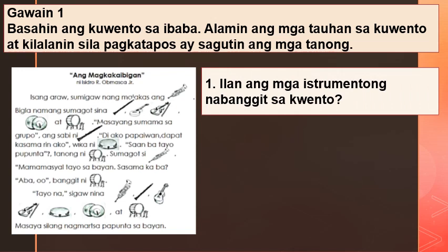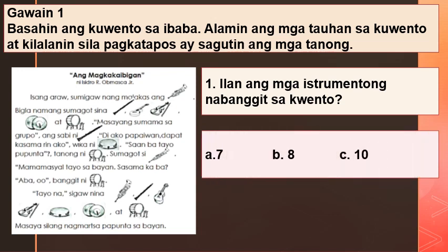Narito ang mga katanungan sa ating binasang kwento. Unang tanong: Ilan ang mga instrumentong nabanggit sa kwento? A. 7, B. 8, C. 10.